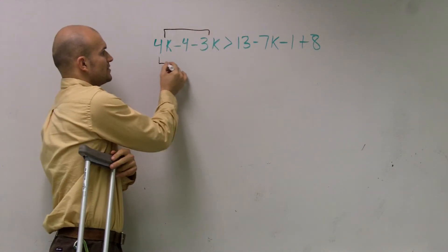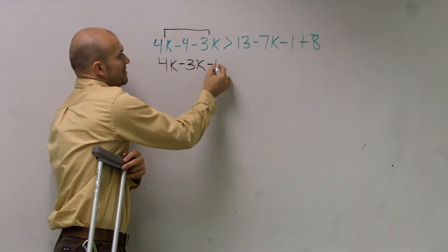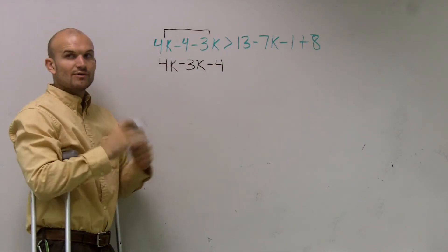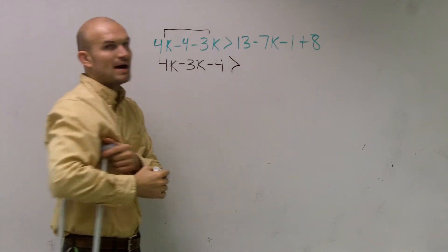So to combine these, I'm just going to rewrite them next to each other: 4k minus 3k and then minus 4. The only reason why I'm rearranging this is so you guys can see how it's easy to combine your like terms.